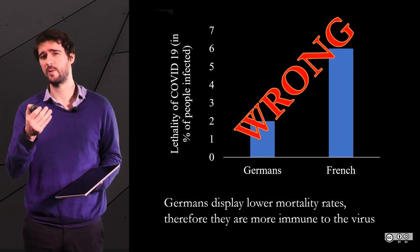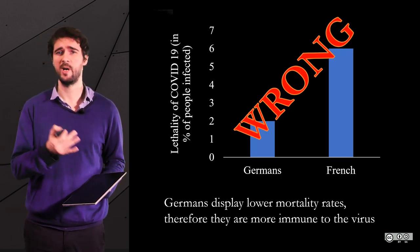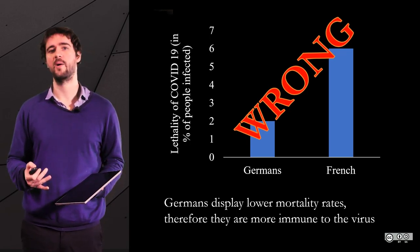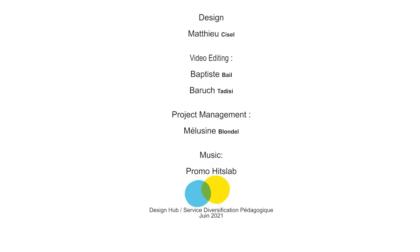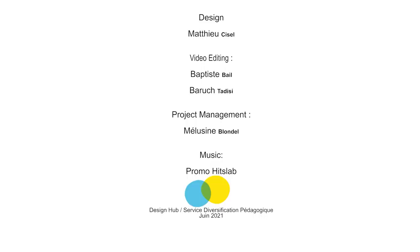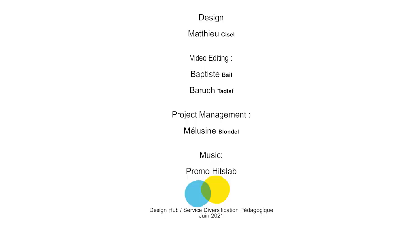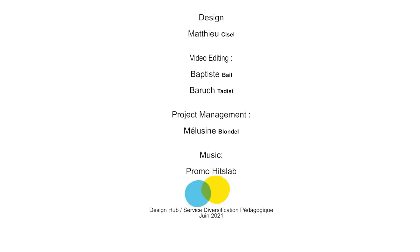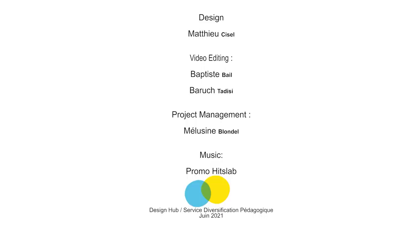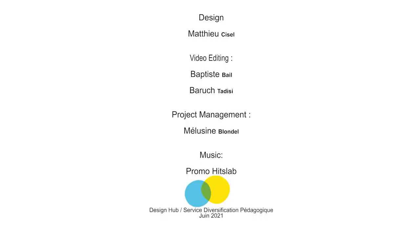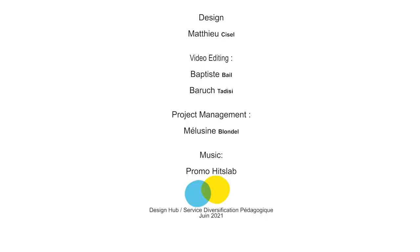For an example involving data analysis, let's take the coronavirus, and talk about lethality rates among different groups of people, like the German and French people. By lethality rate, we mean the proportion of infected people that die of the virus. There were quite significant differences at the beginning of the pandemic between Germany and France. If the Germans have a better immunity than the French, then they will display lower lethality rates on average. We observed that the lethality rates are lower in Germany, therefore Germans have a better immunity. This is a propositional fallacy — it could be partly because of that, but there could be other reasons: the efficiency of the healthcare system, the number of beds available in hospitals, testing policies, and so forth.